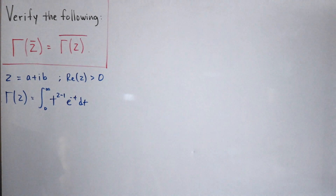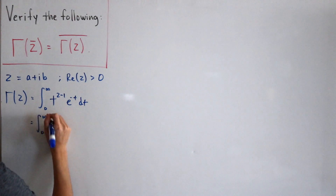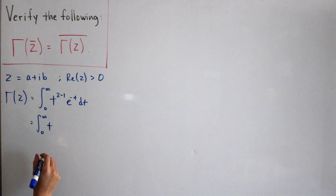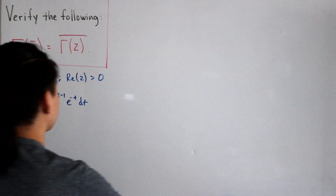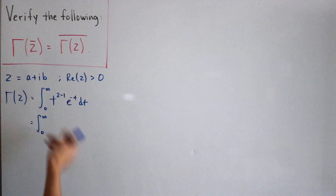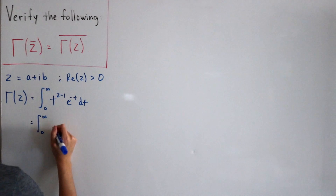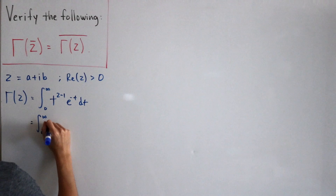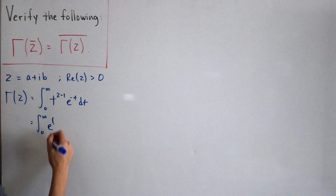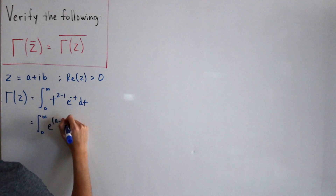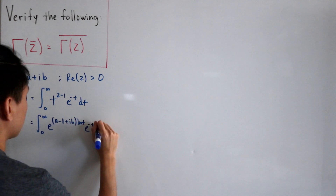Now let's plug the complex number z back into the integral. We use the fact that t equals e to the power ln(t), so we write the integrand in exponential form. Substituting z, we separate the real and imaginary parts: we get e to the power of (a minus 1) plus i times b times ln(t), multiplied by e to the negative t, dt.